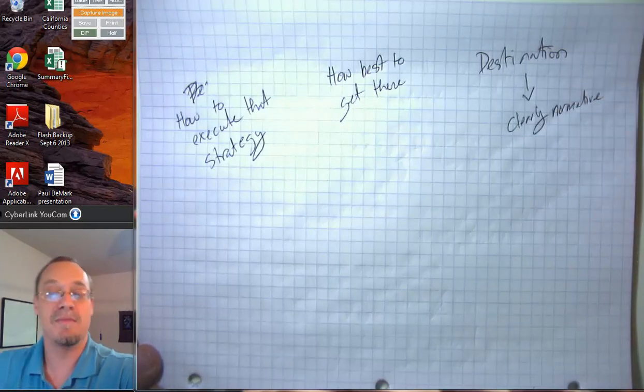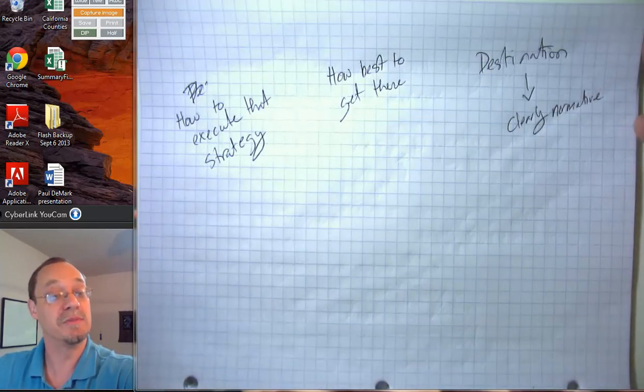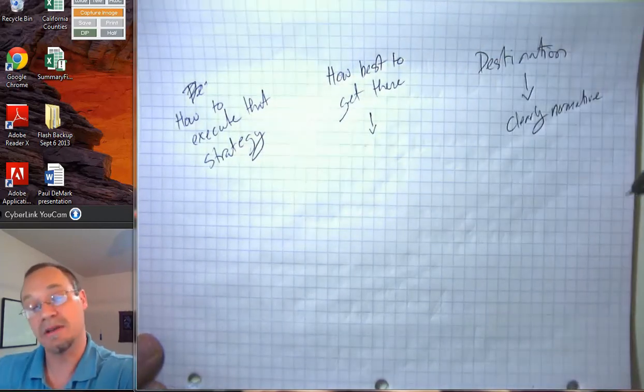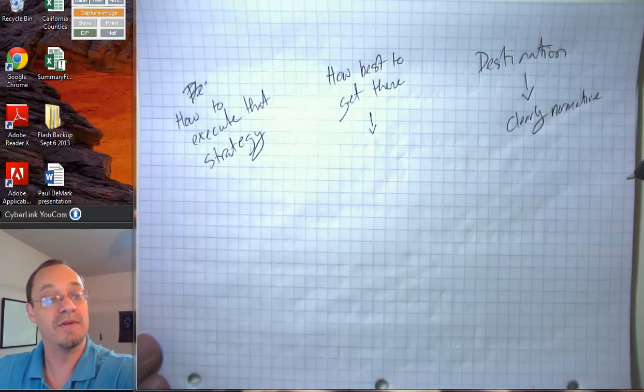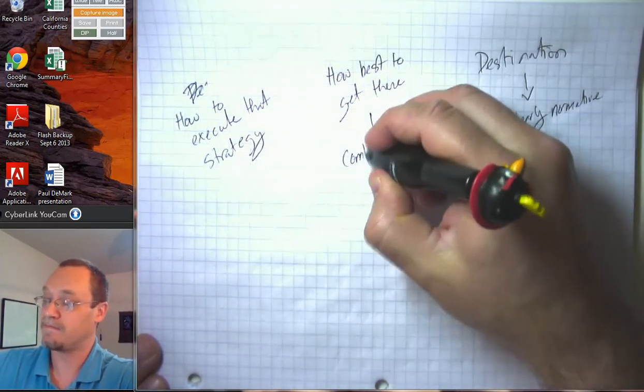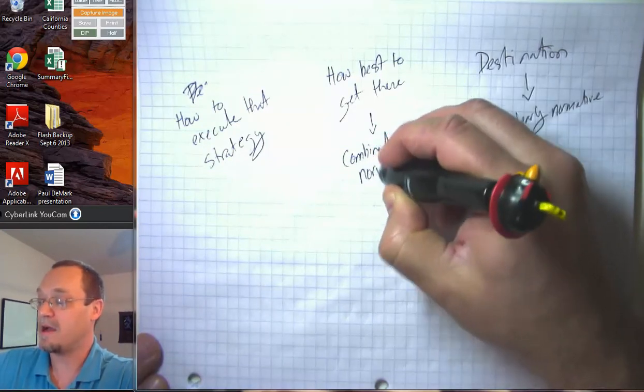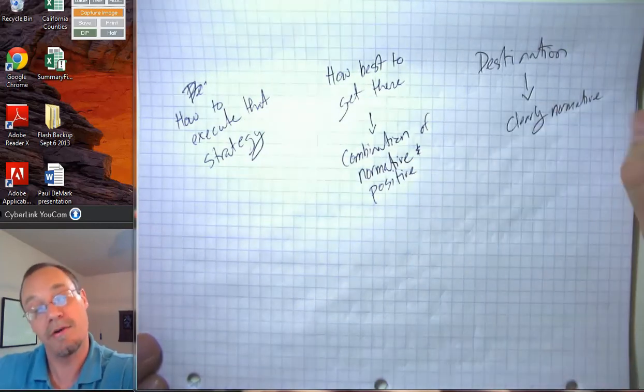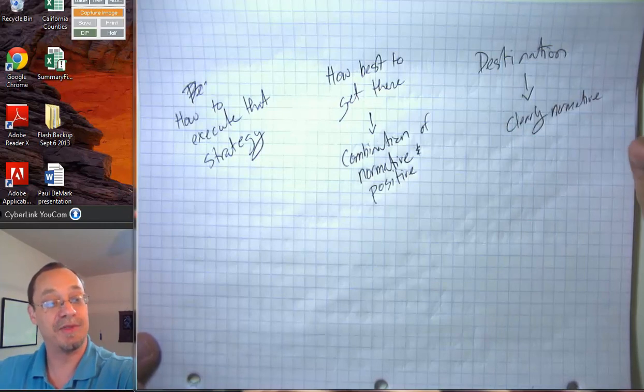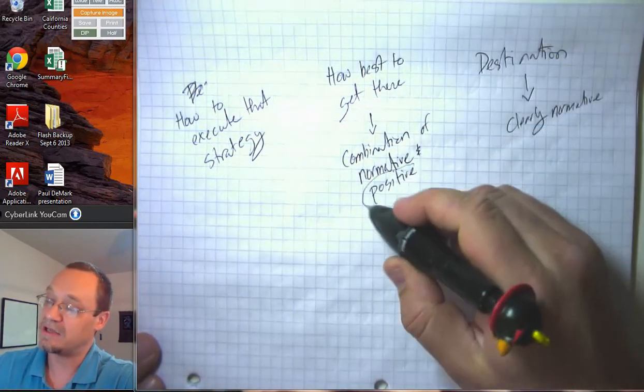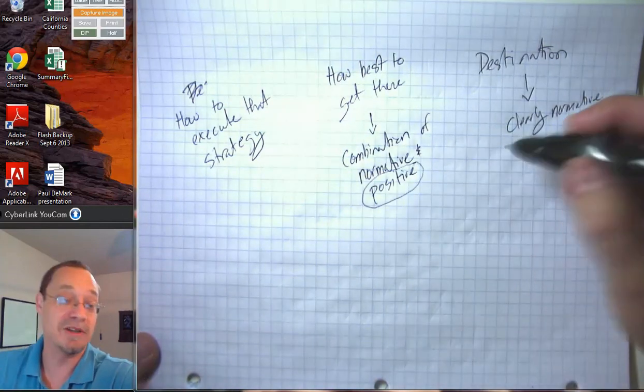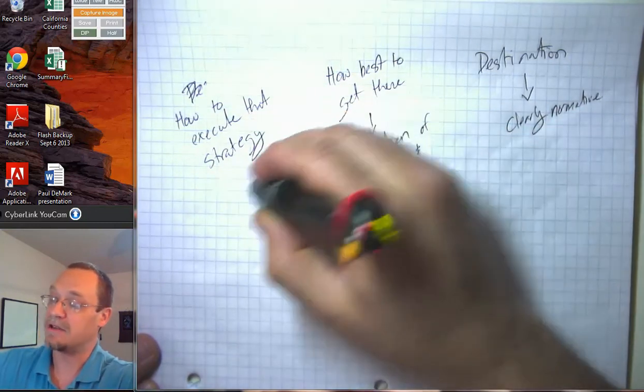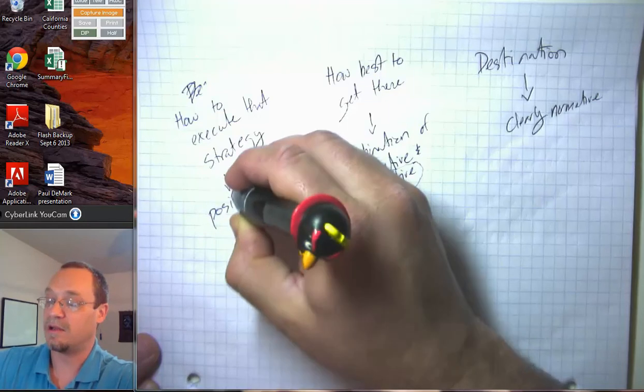How best to get there, we're starting to rely upon a combination of normative and positive analysis. Do we want to get to our destination by a scenic route that's slow or a less scenic route that's faster? That involves both positive questions about what the routes are like and normative things about how much we value scenery versus time. How to execute that strategy is more clearly a positive statement.